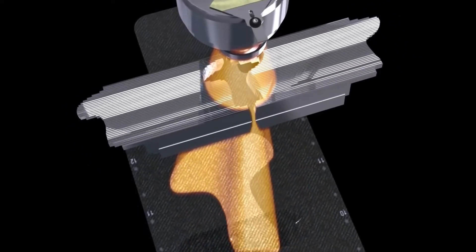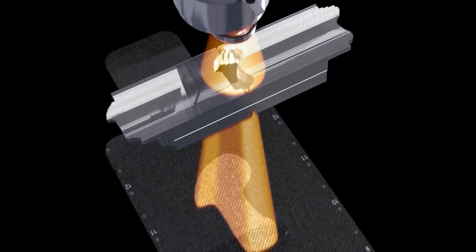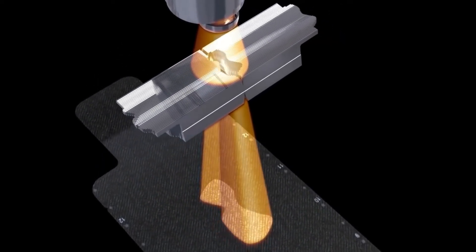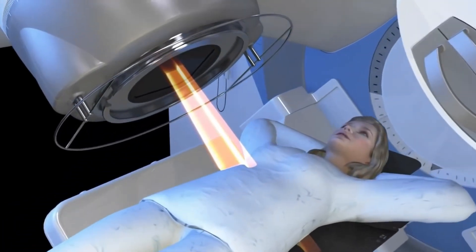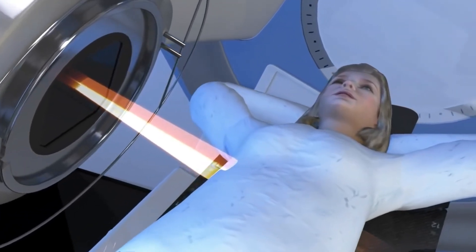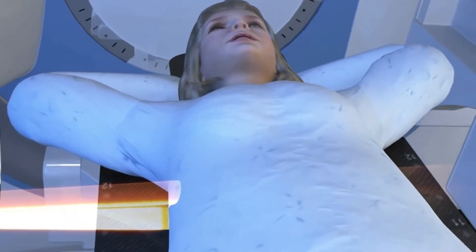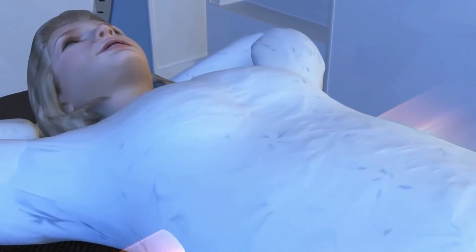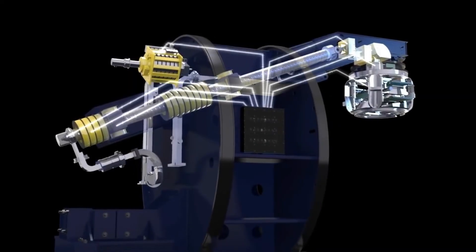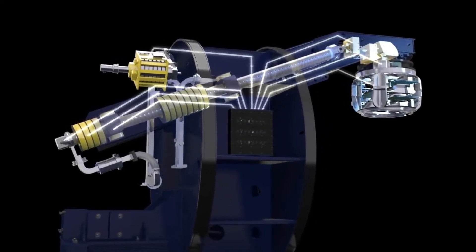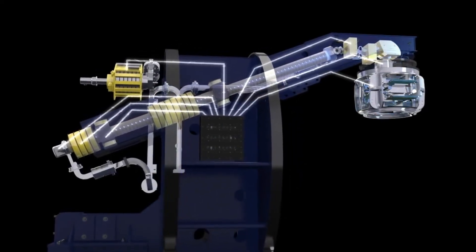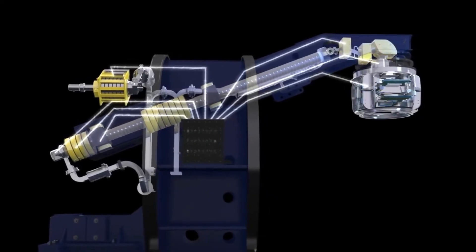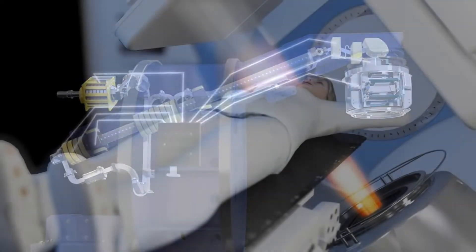This is done using a multi-leaf collimator, a number of fine tungsten leaves which move independently of one another and can create a variety of complex treatment shapes. It also ensures synchronization between the delivered dose and the multi-leaf collimator. One computer system controls both the LINAC and the multi-leaf collimator.